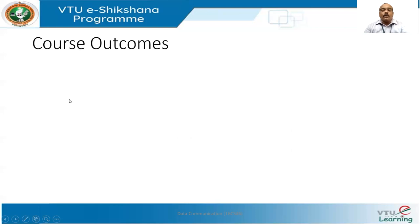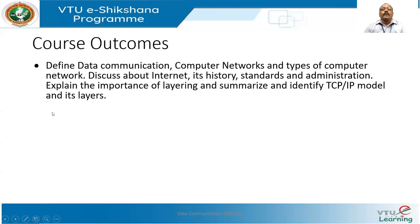The first course outcome is that after completion of the course, the student will be able to define data communication, computer networks, and types of computer networks. The student will also be able to discuss the internet, its history, standards, and administration, and will be able to explain the importance of layering and identify the TCP/IP model and its layers.